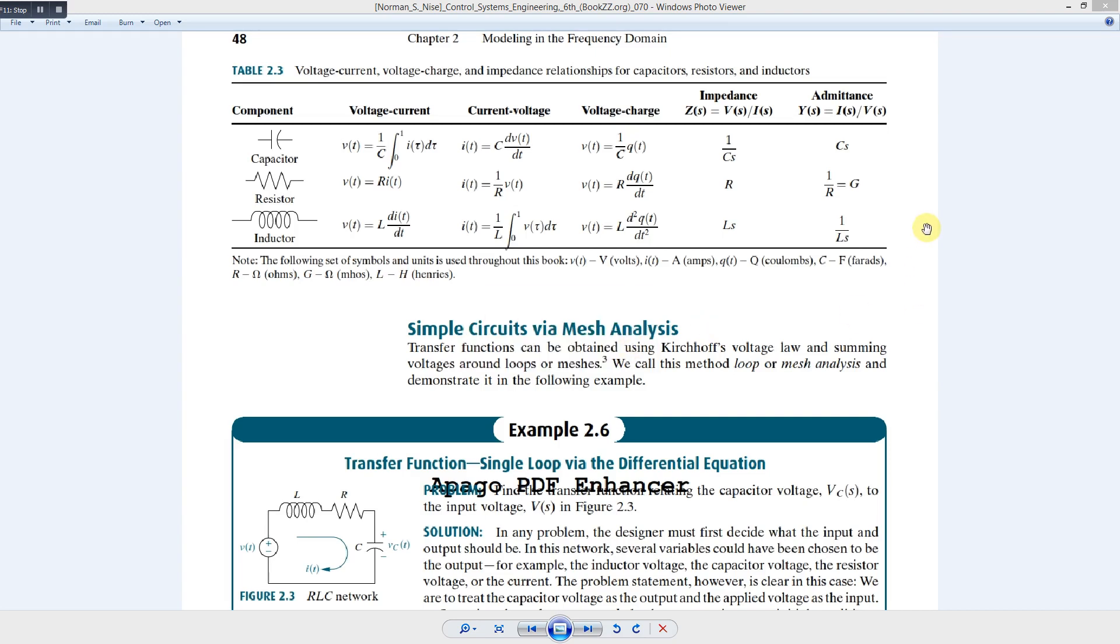Hello guys, in electrical control systems the most frequently used elements are capacitor, resistor, and inductor. These are the basic elements and we usually perform modeling of other elements in terms of these three basic elements.